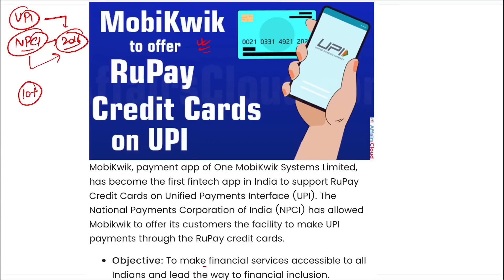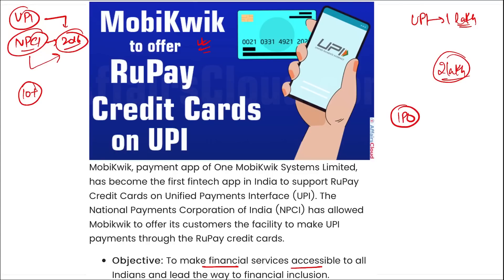The objective is to make financial services accessible to all Indians and lead the way to financial inclusion. Regarding the limit of fund transfer using UPI: for normal UPI transactions, the limit is up to ₹1 lakh. For specific categories such as capital market, collection, and insurance, the limit is up to ₹2 lakh. For IPO — Initial Public Offering — and retail direct schemes, the limit is up to ₹5 lakh.